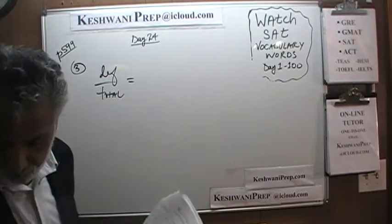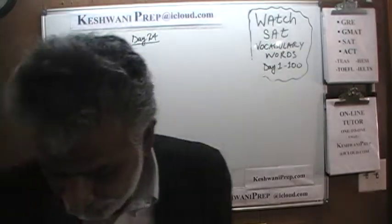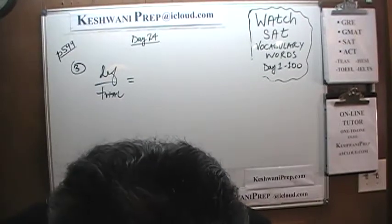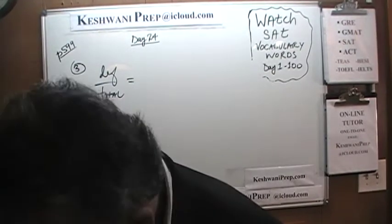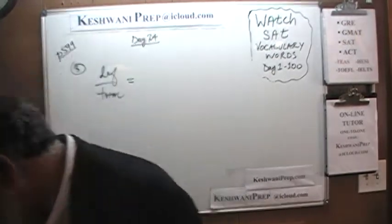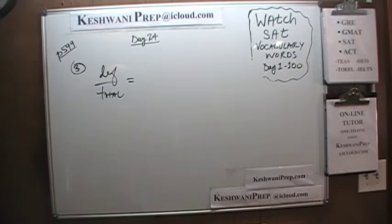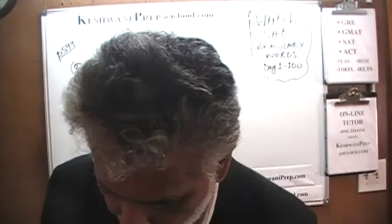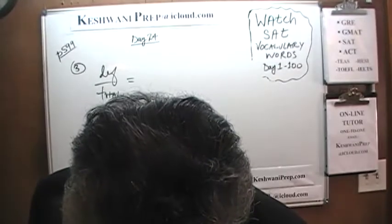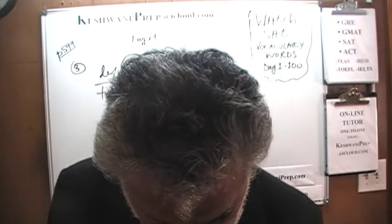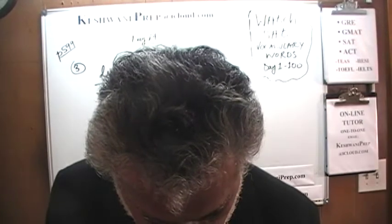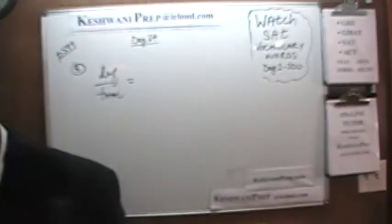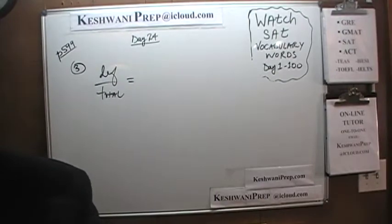Let me read this exactly as it's phrased in the problem: 'In a sample of 200 cars, three were found to have defects. At this rate, how many defective cars can we expect to find out of 10,000?' — not 100,000; I misspoke earlier.